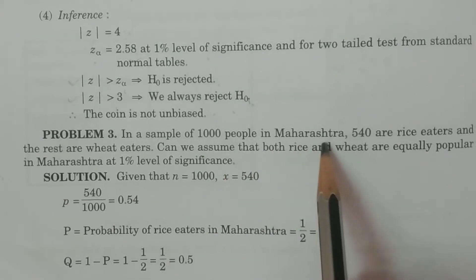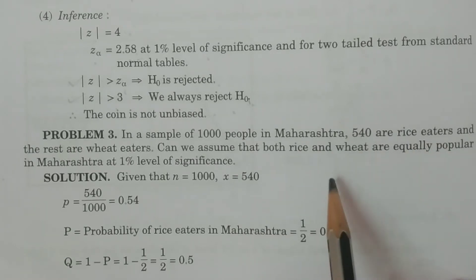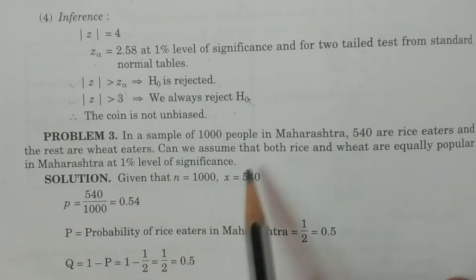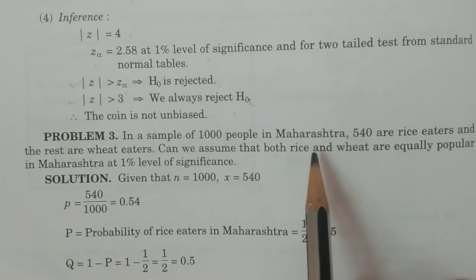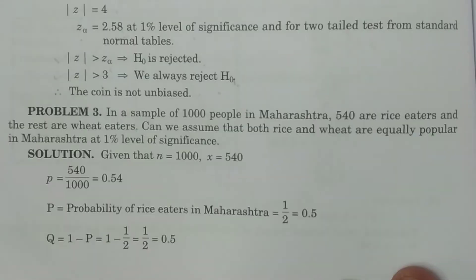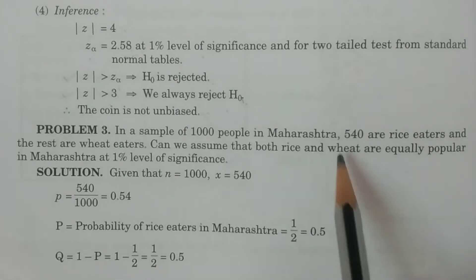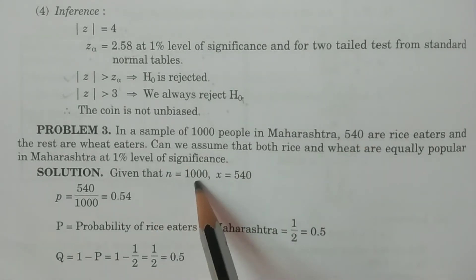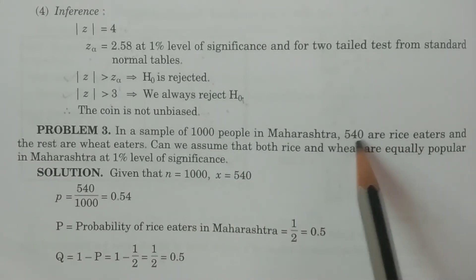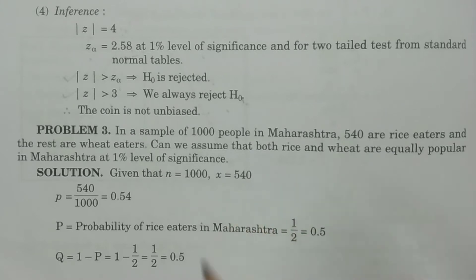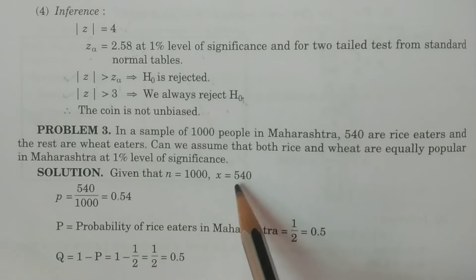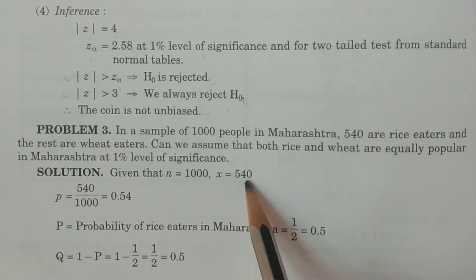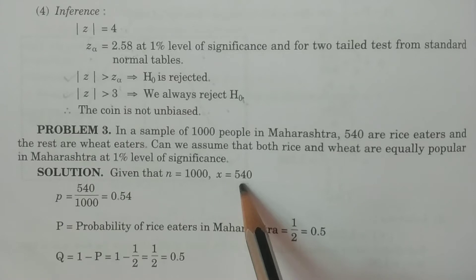In a sample of 1000 people in Maharashtra, 540 are rice eaters and the rest are wheat eaters. So the data is: n is equal to 1000, and x is equal to 540, which is the number of successes — rice eaters. This is a one-sample test for single proportion.